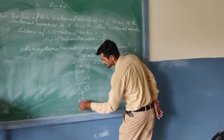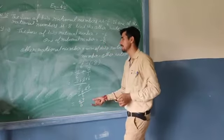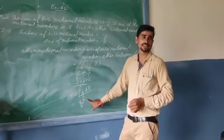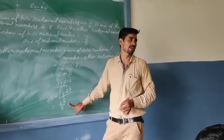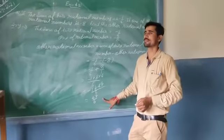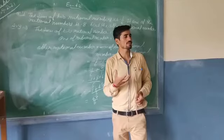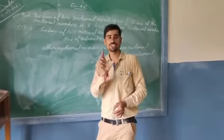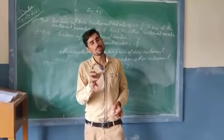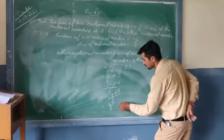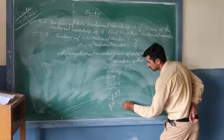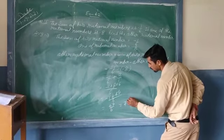Now we have an improper fraction, so we need to convert it to mixed fraction. How to divide: six times seven equals 42, remainder five. So seven and five upon six.